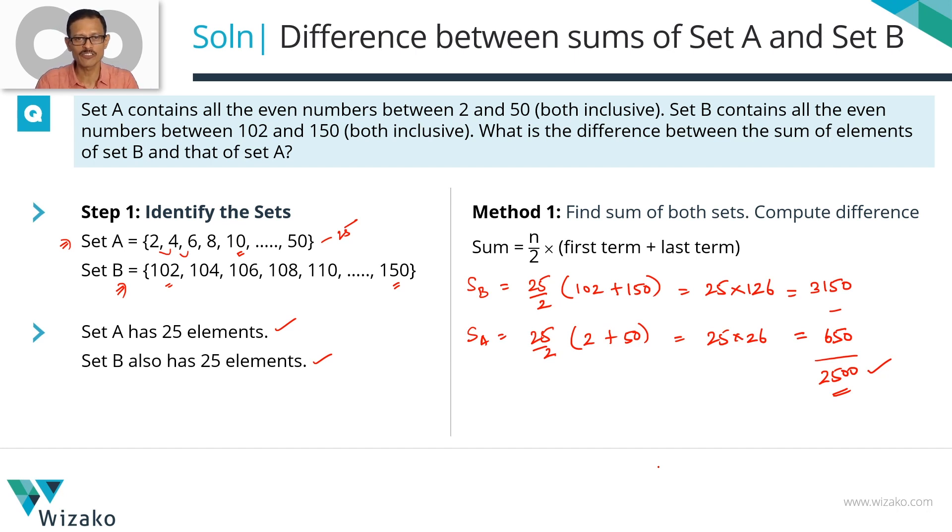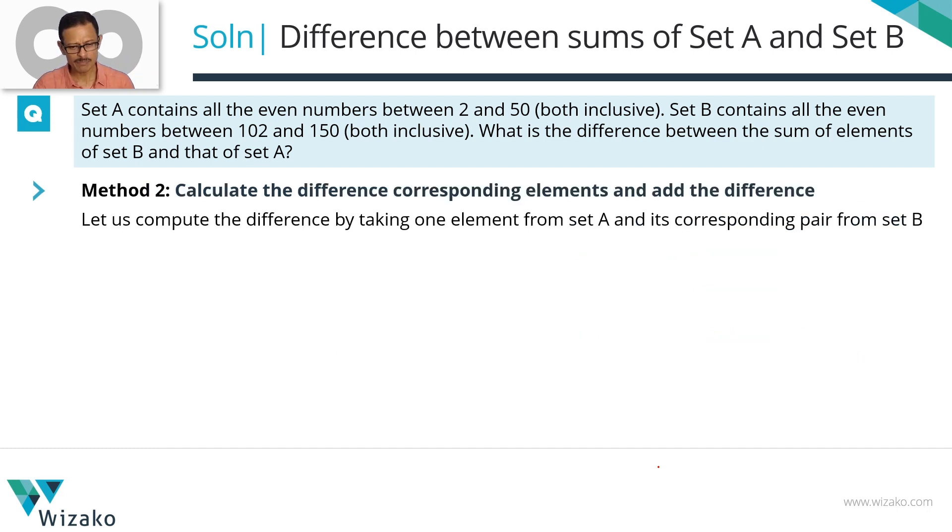Let's look at, can we look at it a little differently? Some cases, these throw open our mind to looking at things differently. Let's do that here. In method 2, what I'm going to do is, I'm going to do it a little differently. I'm not going to compute the sum and then the difference. Here, I'm going to compute the difference between, I'm calling them as corresponding elements of both the sets. And then, I'm going to add all the differences. What do I mean by that?